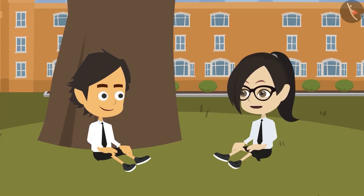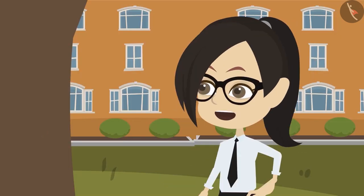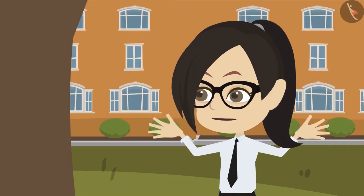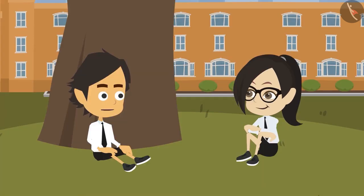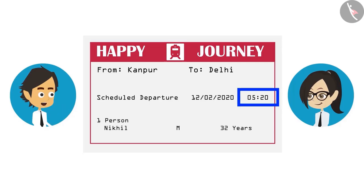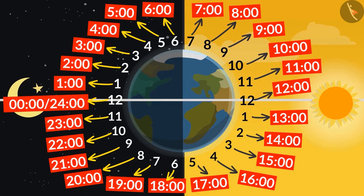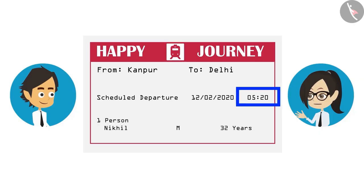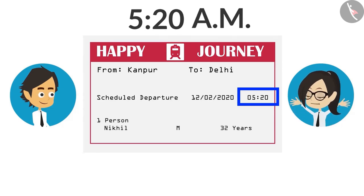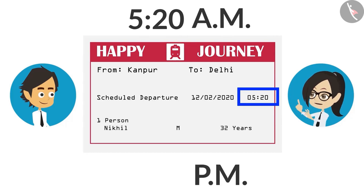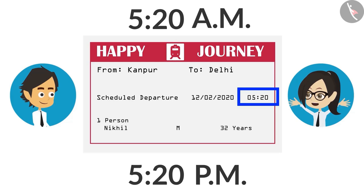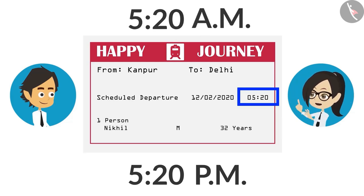He reached the station before the time given on the ticket, but the train did not leave in front of him — so how did he miss his train? The time written on his ticket was 20 minutes past 5 o'clock. But was AM or PM written in front of the time? Nothing like that was written — only 20 minutes past 5 o'clock. That means the time was written in 24-hour format, and in 24-hour format, 20 minutes past 5 o'clock means 5:20 in the morning. But he arrived at 5:20 in the evening, and the train had already left in the morning.